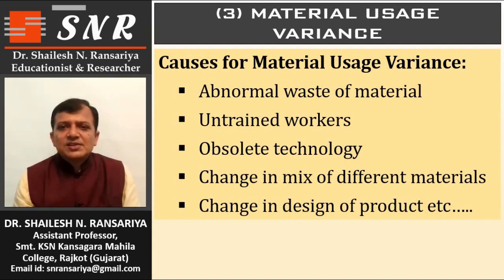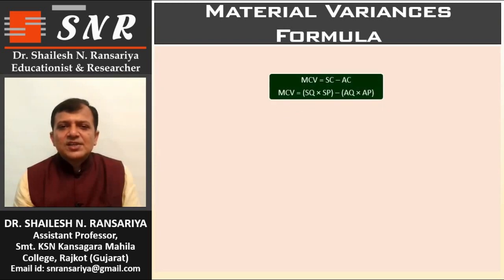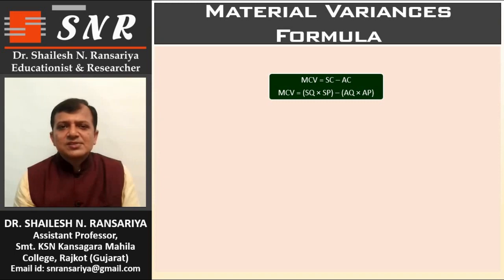Now I will explain the formulas used to calculate material variances. The first is Material Cost Variance, MCV, which is the difference between standard cost and actual cost: MCV = SC − AC. If SC is not given, we calculate it as SQ × SP. If actual cost is not given, we calculate it as AQ × AP.